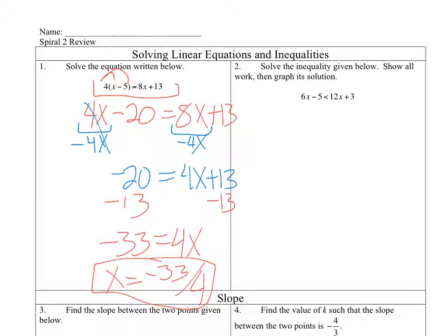For my second one, I've got x on both sides again. I'm probably going to get rid of the smaller x to keep it positive. So minus 6x minus 6x. And I end up with negative 5 is less than 12x minus 6x is 6x plus 3.